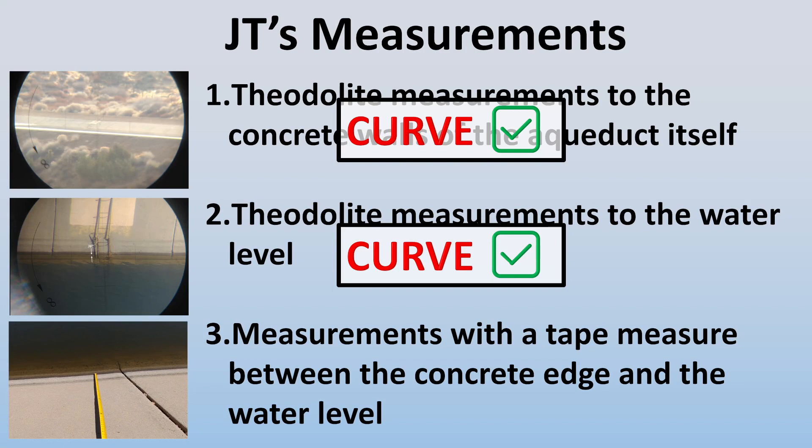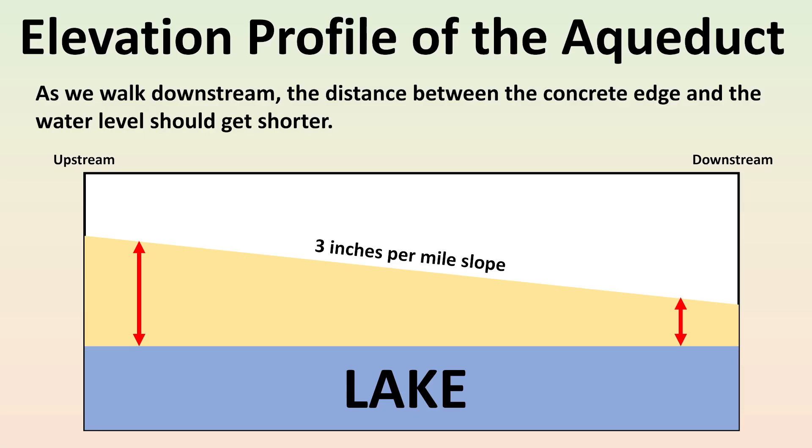All right. So far we've shown that his measurements of the aqueduct walls show curvature of the earth and the three inches per mile slope. We've also shown that he's measured a drop from horizontal in the level of the water, even though it's all at the same elevation. But what about his measurements with a tape measure from the edge of the walls down to the water level? Well, if you've been paying attention, this should be fairly straightforward. The two key questions we had to answer were about the elevation profile of the concrete walls and the elevation profile of the water. And if you put those answers together, it should be fairly easy to conclude that as you walk downstream, the distance between the concrete edge and the water level should get shorter. But let's go and verify his measurements anyway.